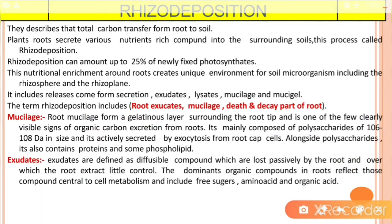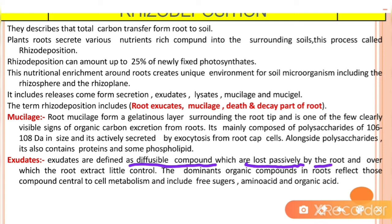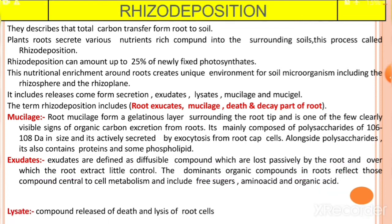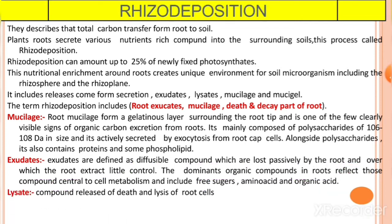Exudates are defined as diffusible compounds which are lost passively by the root and over which the root exerts little control. The dominant organic compounds reflect those central to cell metabolism and include free sugars, amino acids, and organic acids. Lysates are the compounds released by the death and lysis of root cells. This covers all aspects of Rhizodeposition.